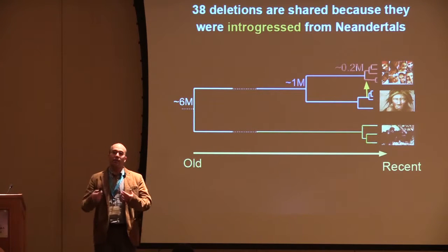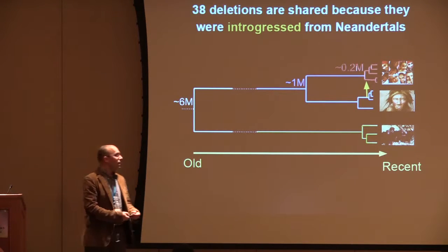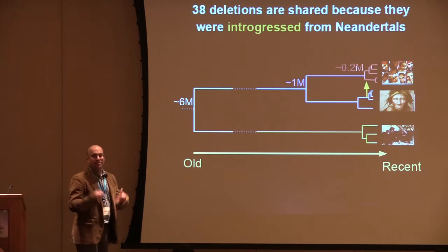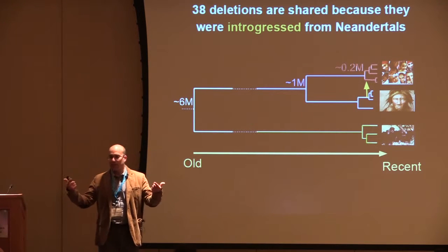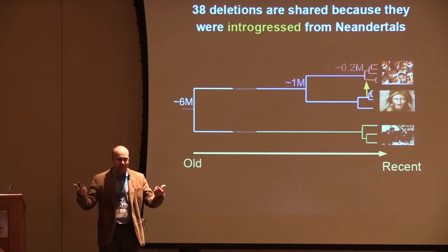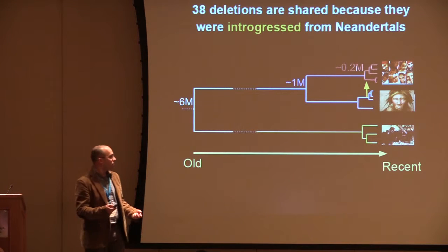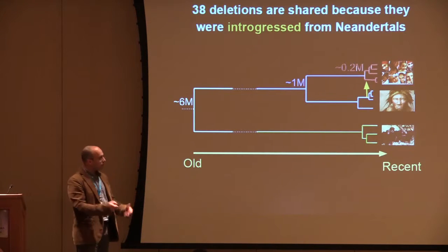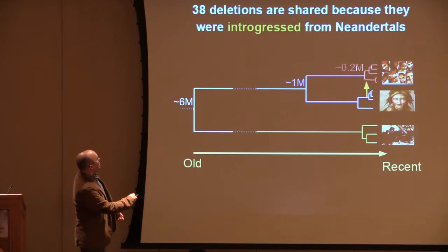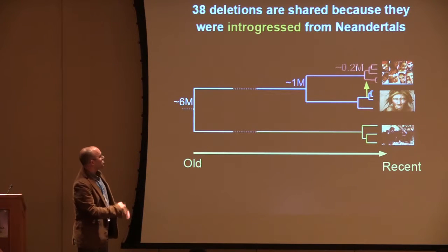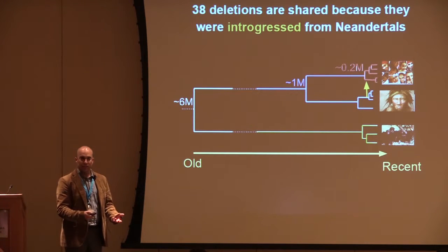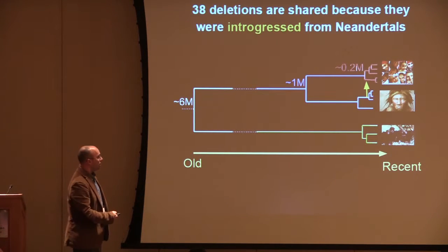We then analyzed the haplotypes surrounding these deletions, their frequencies, and related features to understand why this sharing is happening and to confirm we are interpreting it correctly. We found that 38 of these shared deletions are actually coming from Neanderthals through introgression — meaning they were introgressed much more recently.